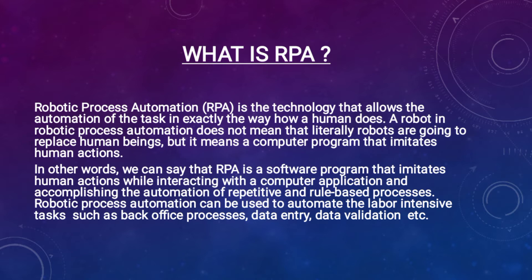RPA is an acronym for Robotic Process Automation. Its main work is to imitate humans — specifically, to copy human work, mostly tasks which are repeated. The term 'robotic' in RPA does not mean that an actual robot is performing the task; it means a computer program is imitating human action. We can take a chatbot as an example of RPA.